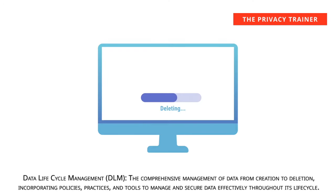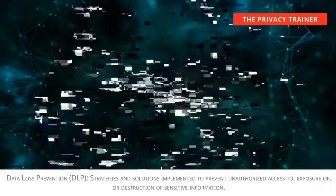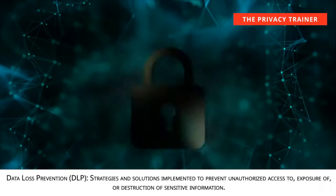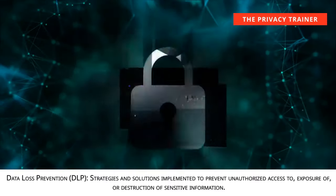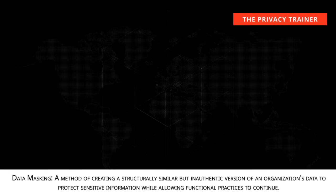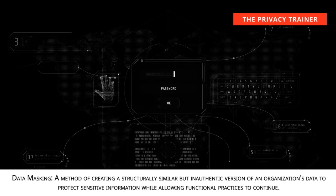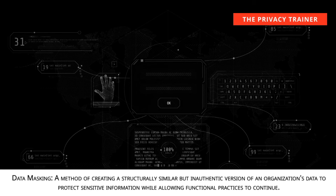Data lifecycle management, DLM. The comprehensive management of data from creation to deletion, incorporating policies, practices, and tools to manage and secure data effectively throughout its lifecycle. Data loss prevention, DLP. Strategies and solutions implemented to prevent unauthorized access to, exposure of, or destruction of sensitive information. Data masking. A method of creating a structurally similar but inauthentic version of an organization's data to protect sensitive information while allowing functional practices to continue.